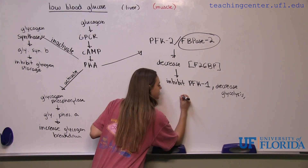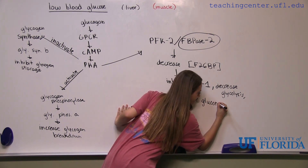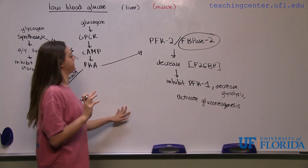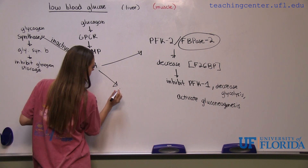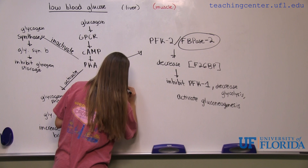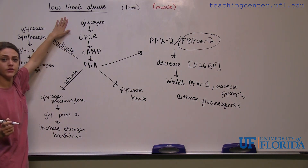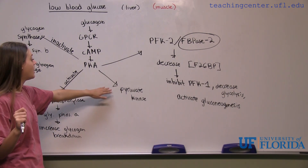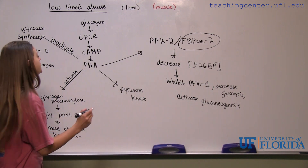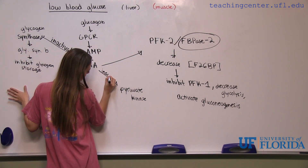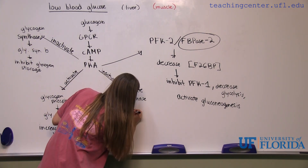Furthermore, this is also going to activate gluconeogenesis. Now there's one last thing that PKA is going to affect for the liver cells, and that is pyruvate kinase. If we have low blood glucose and we don't want glycolysis to occur, then we want to inactivate pyruvate kinase, because an active pyruvate kinase would continue and activate glycolysis. So we want to inactivate pyruvate kinase by phosphorylating it via this kinase activity, and that is going to decrease glycolysis.